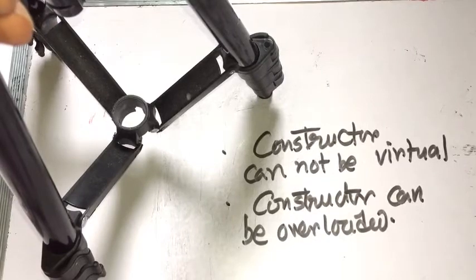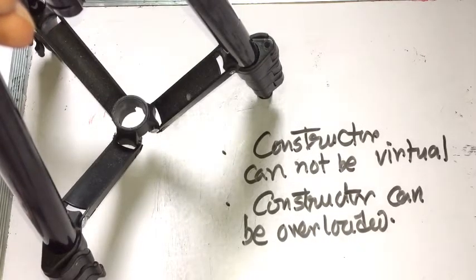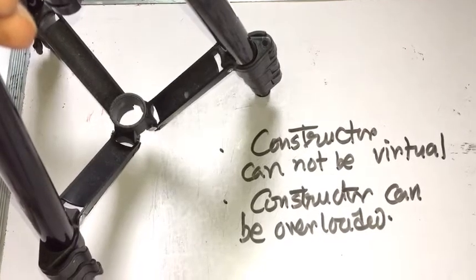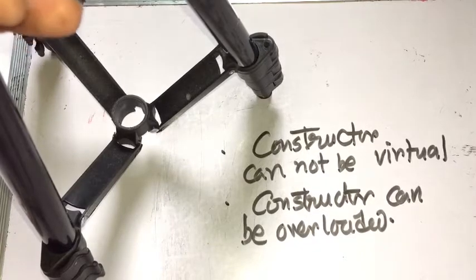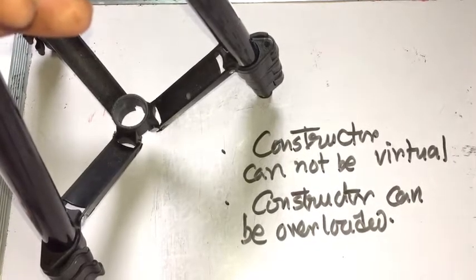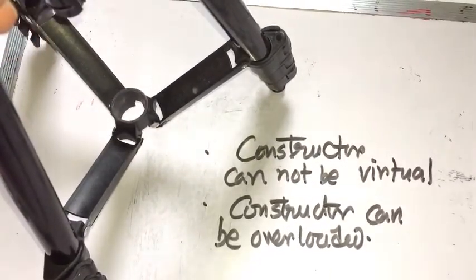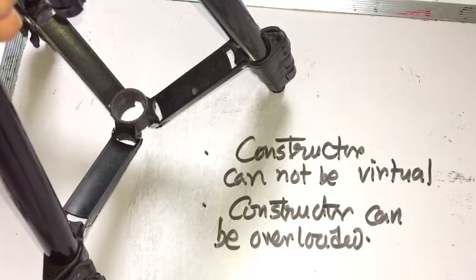constructor never returns anything not even void, constructor is called automatically when the object is created, constructor is always declared in the public section, and it is used to initialize the data members of the class.